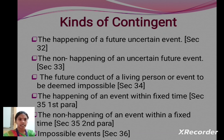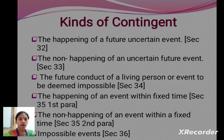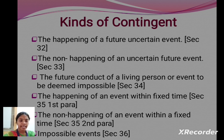Kinds of contingent contract: First, the happening of a future uncertain event, under Section 32. Second, the non-happening of an uncertain future event, under Section 33. Third, the future conduct of a living person or event deemed impossible, under Section 34. Fourth, the happening of an event within a fixed time, under Section 35, first para. Fifth, the non-happening of an event within a fixed time, under Section 35, second para. Sixth, impossible events, under Section 36.